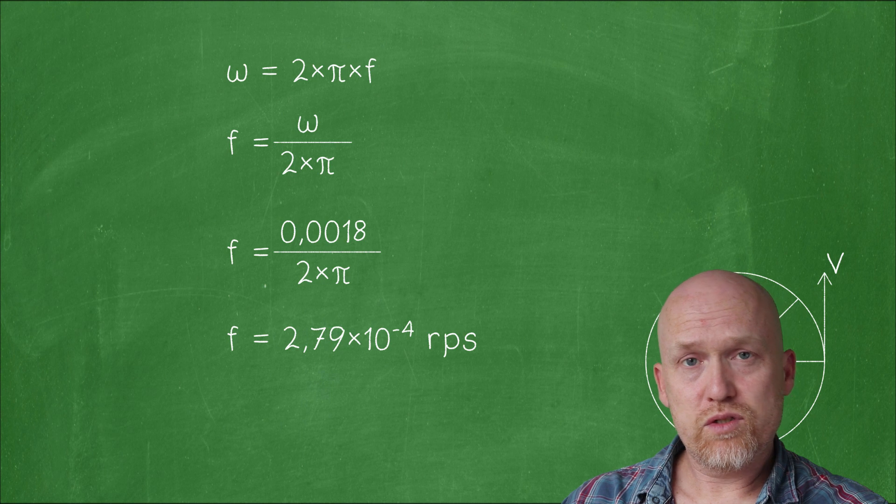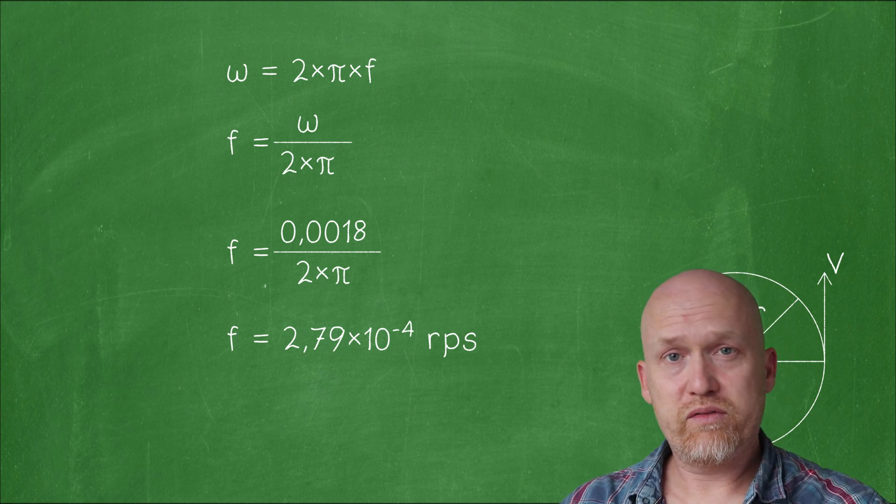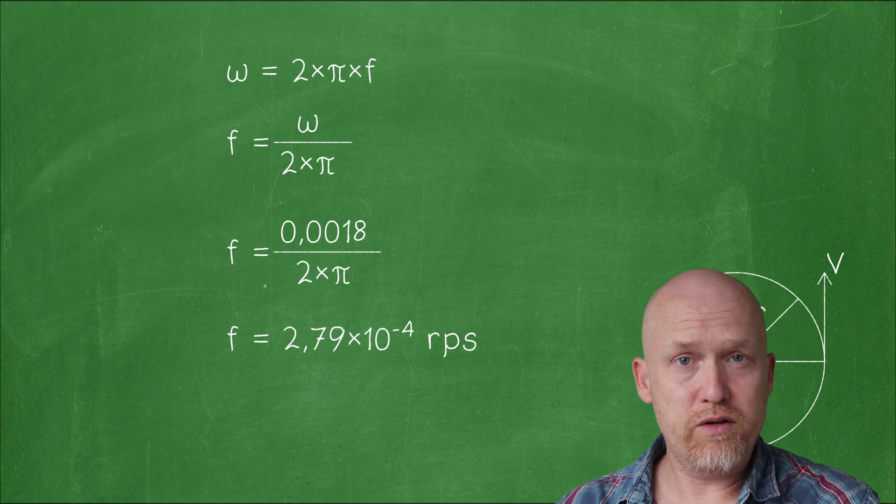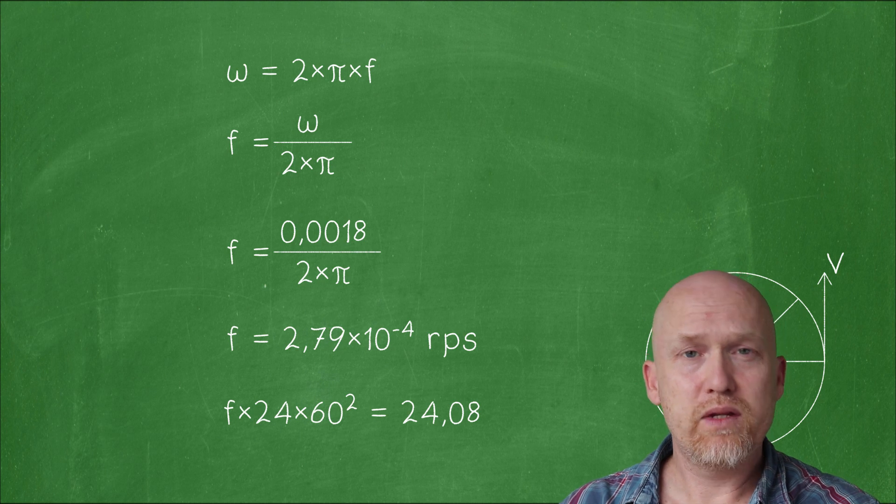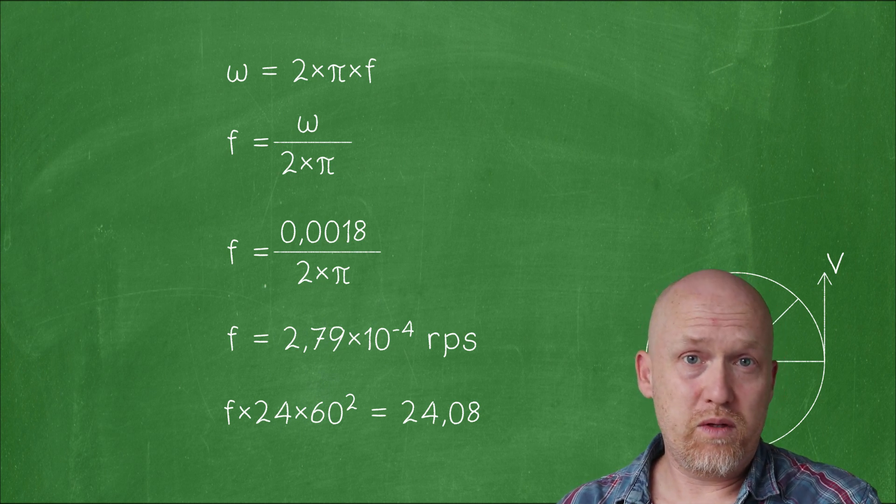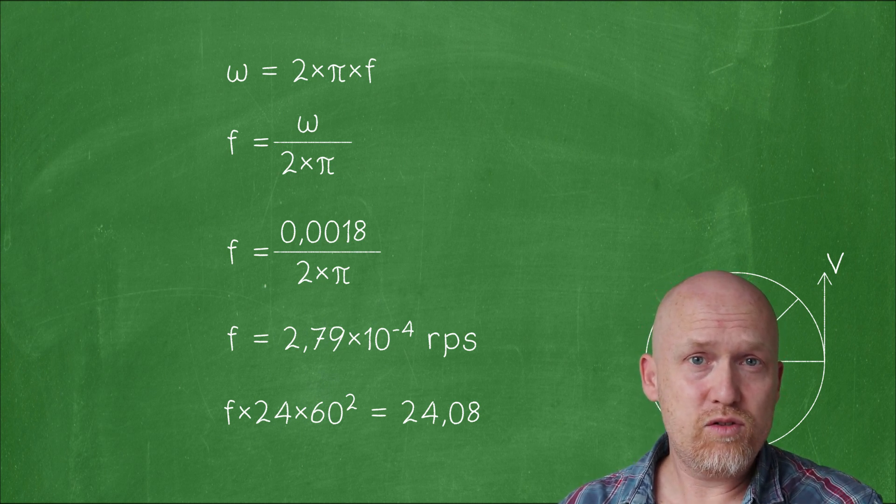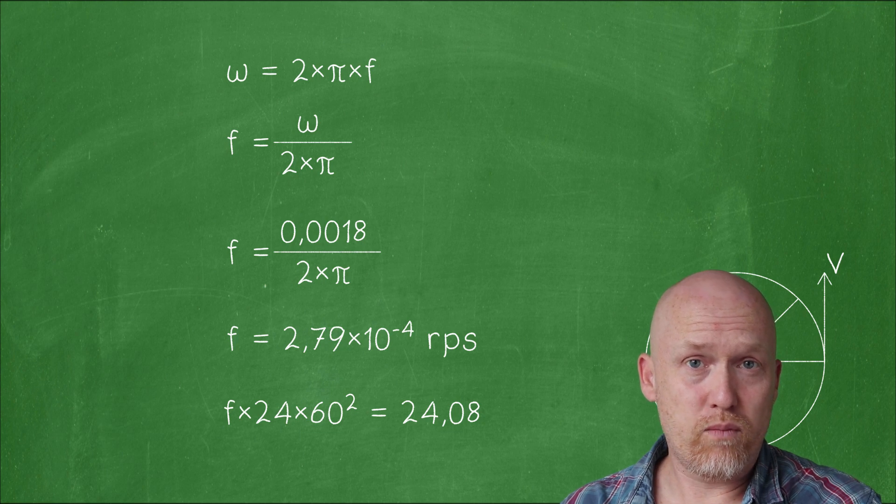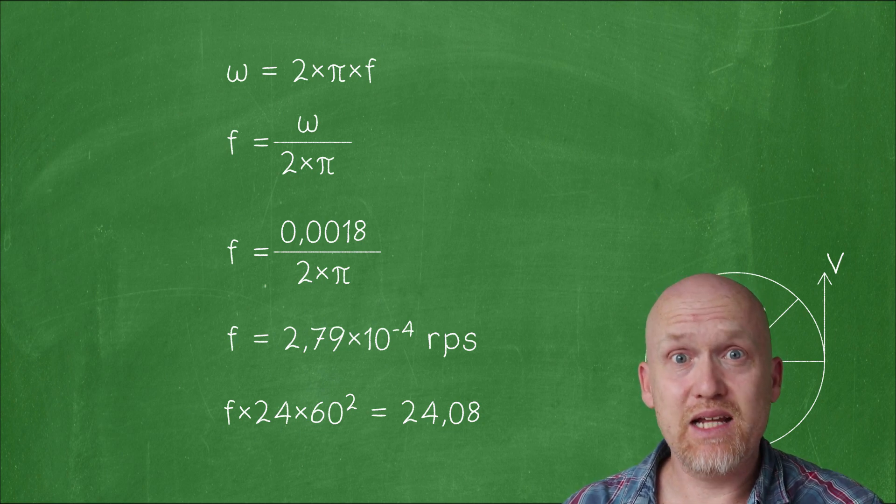The frequency is revolutions per second, so all we're left to do is multiply by the number of seconds in a day. So, in order for things to be flung off the earth, it has to spin more than 24.08 times a day.